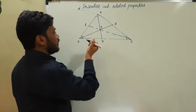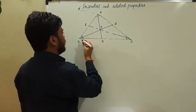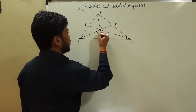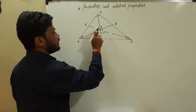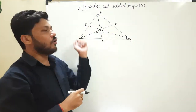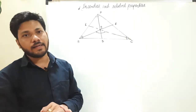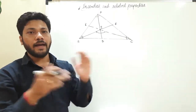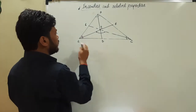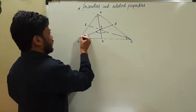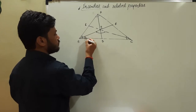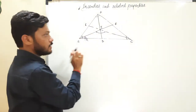Now, if we need to calculate the value of angle BIC — I am talking about this angle, angle BIC — we know the sum of all three angles of any triangle is 180 degrees. Since BD is the angle bisector, the angle at B inside triangle BIC is B by 2, because this is the angle bisector.